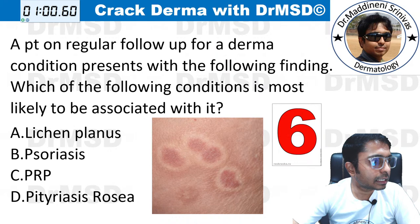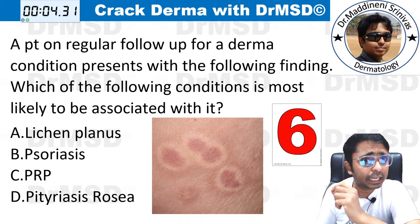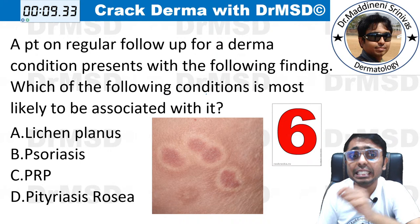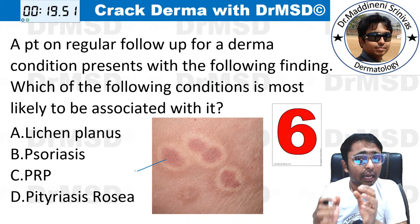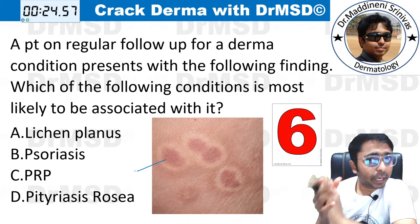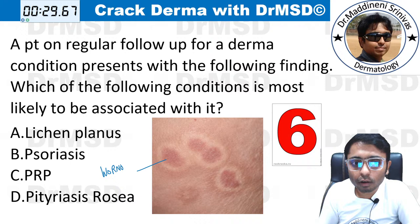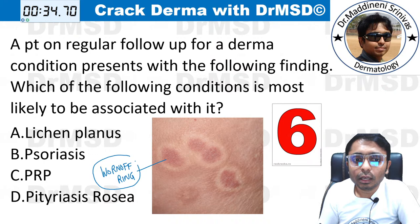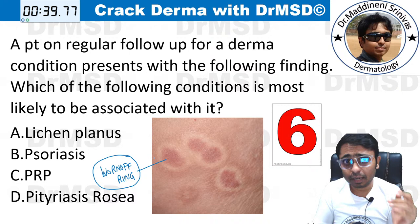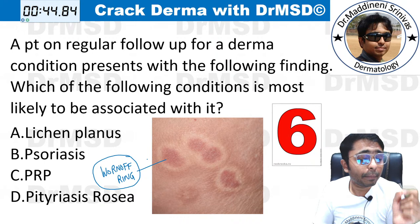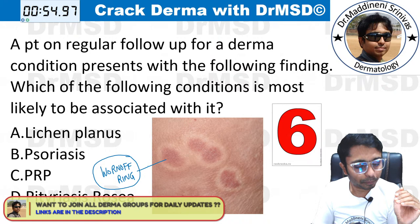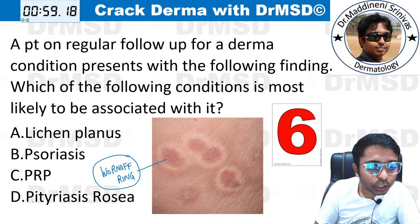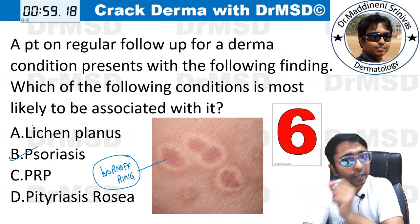Question number six. A patient on regular follow-up for a derma condition presents with the following finding. Which condition is most likely associated with it? You are able to see erythematous lesions, and surrounding them there is hypopigmentation — this is called the worn-off ring. In which of the following disorders is a worn-off ring seen? Options: lichen planus, psoriasis, pityriasis rubra pilaris, or pityriasis rosea. The answer is option B — psoriasis — in which we can see this worn-off ring.